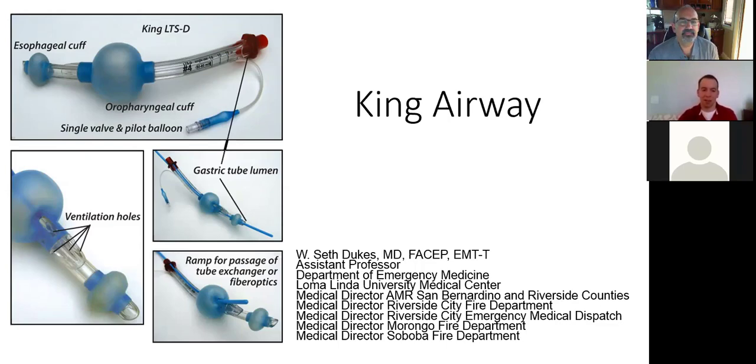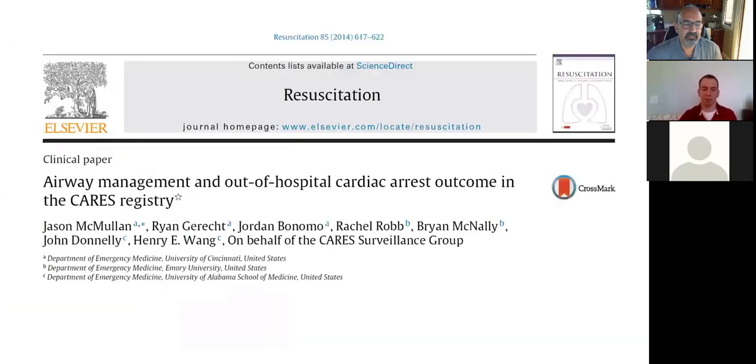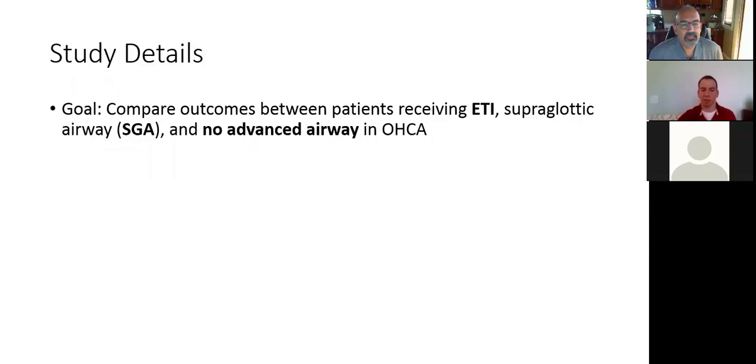So why don't we just jump right in. So the first paper I want to talk about was published in resuscitation back in 2014, it was by McMullen et al. And specifically, they're looking at airway management in out-of-hospital cardiac arrest, where they went through the CARES registry to see what patients got and their outcomes. The patients received either endotracheal intubation, supraglottic airway, or they got no advanced airway, aka BVM or bag valve mask.